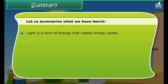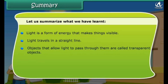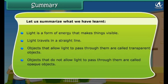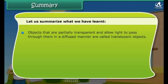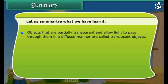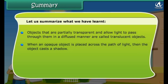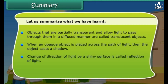Let us summarize what we have learned. Light is a form of energy that makes things visible. Light travels in a straight line. Objects that allow light to pass through them are called transparent objects. Objects that do not allow light to pass through them are called opaque objects. Objects that are partially transparent and allow light to pass through them in a diffused manner are called translucent objects. When an opaque object is placed across the path of light, the object casts a shadow. A change of direction of light by a shiny surface is called reflection of light.